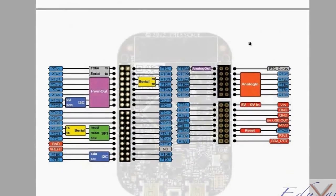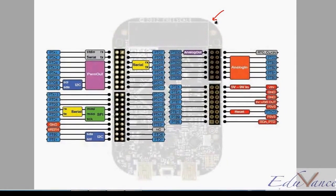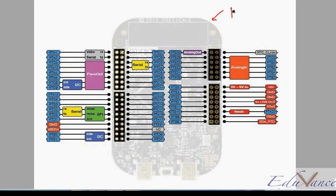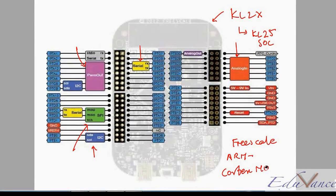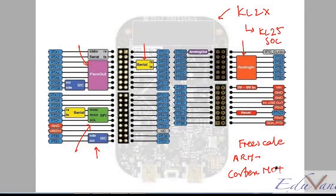For example, the Freedom board contains the SOC which is the Freescale KL25 — actually the KL25Z series in this case. In that SOC, you have PWM outputs, a serial interface, five channels of analog input, I2C, and SPI. One thing we need to note here is that in this particular SOC the ARM controller is a Cortex-M0+ series family.